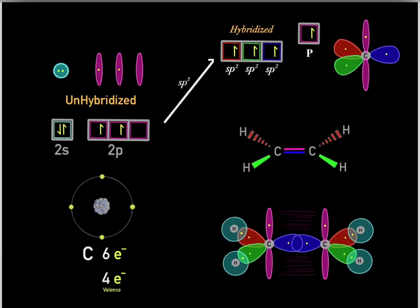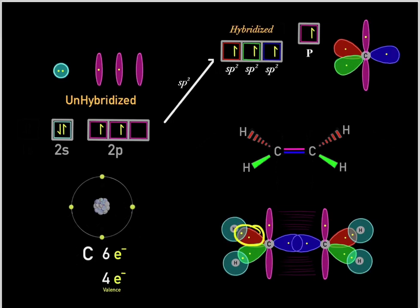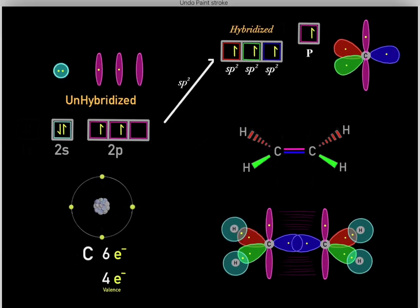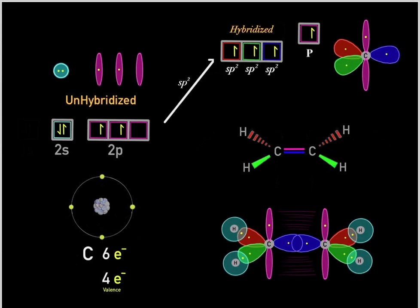For the C-H bonds in ethene, the carbon has an sp2 hybridized orbital and hydrogen has an s orbital — they overlap forming a covalent bond. That's what's going on in this ethene molecule: two carbons that are sp2 hybridized.